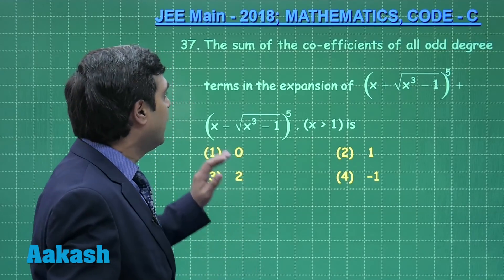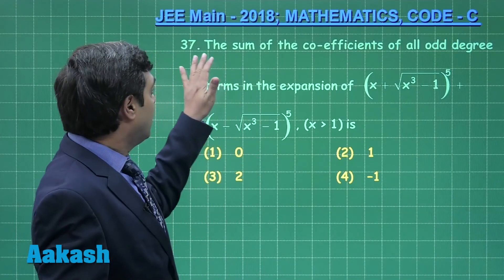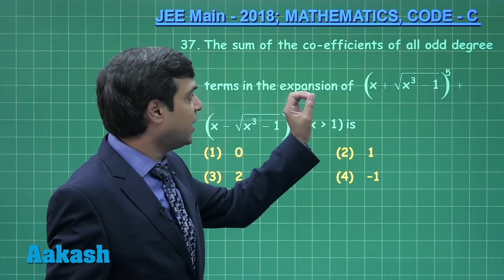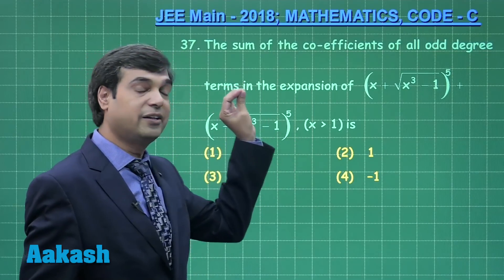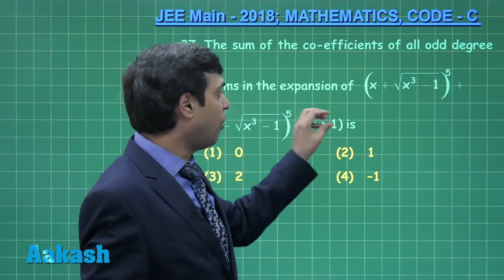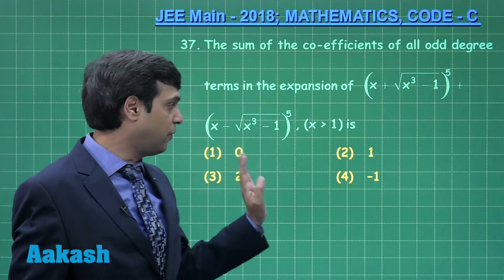Let us move to the next question now from binomial. The sum of the coefficients of all odd degree terms in the expansion of some term is given where x is greater than 1.